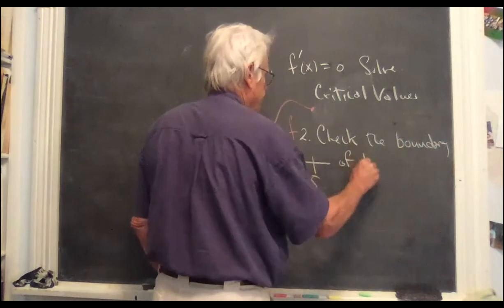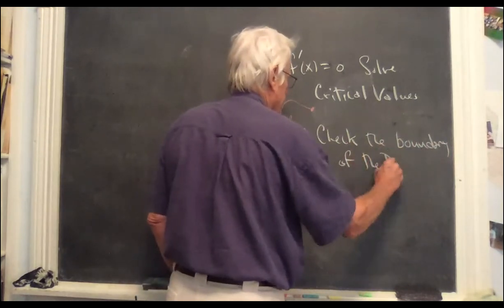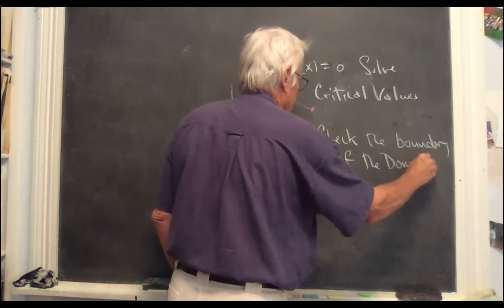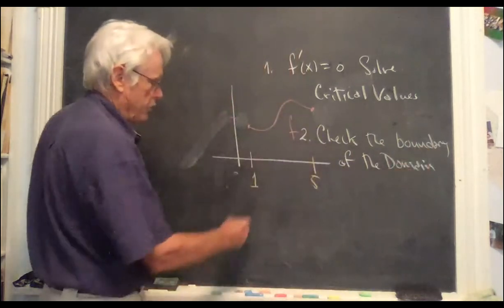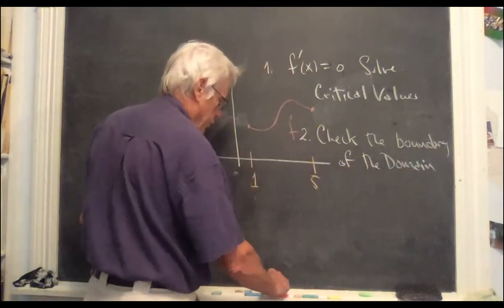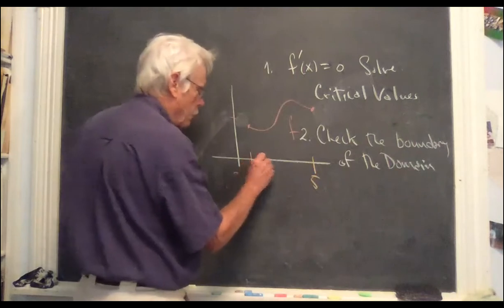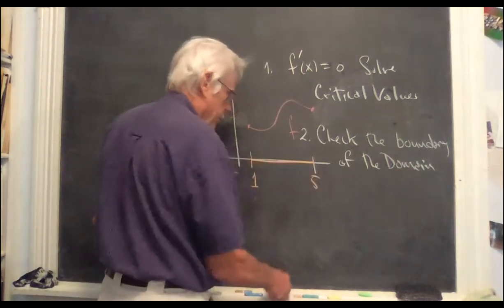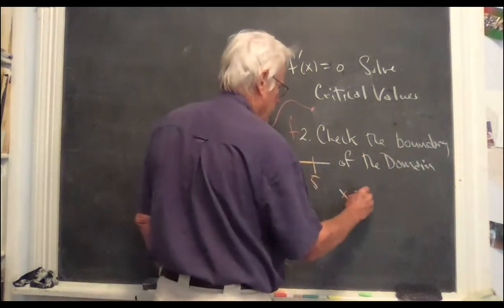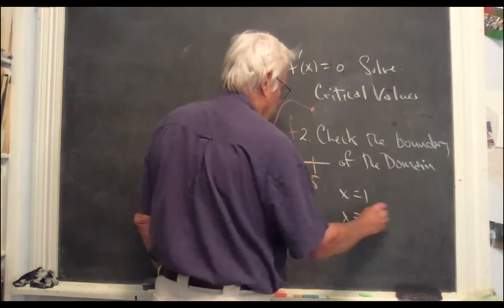of the domain. In this case, the domain was the interval zero to five. So the boundary of that domain just has two points. So you need to check x equals one and x equals five.